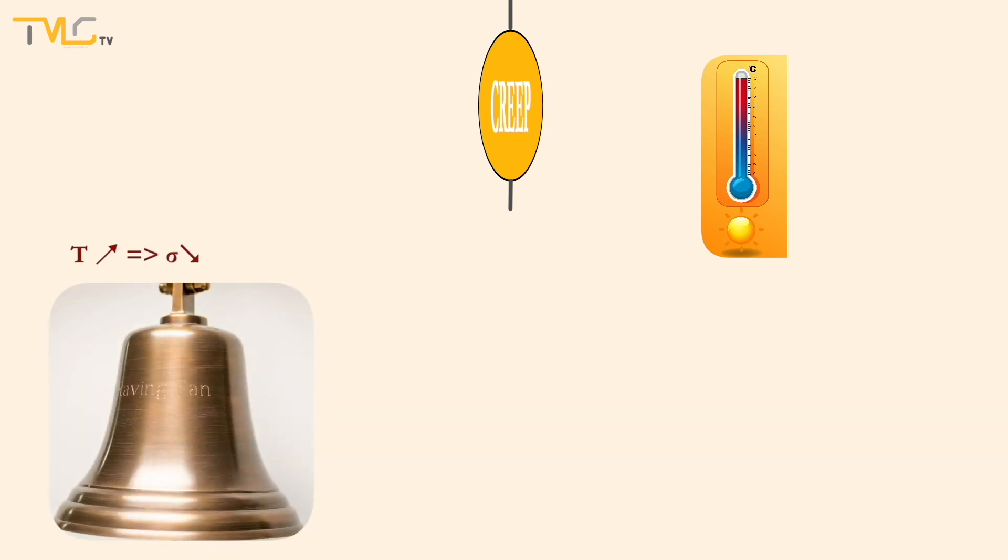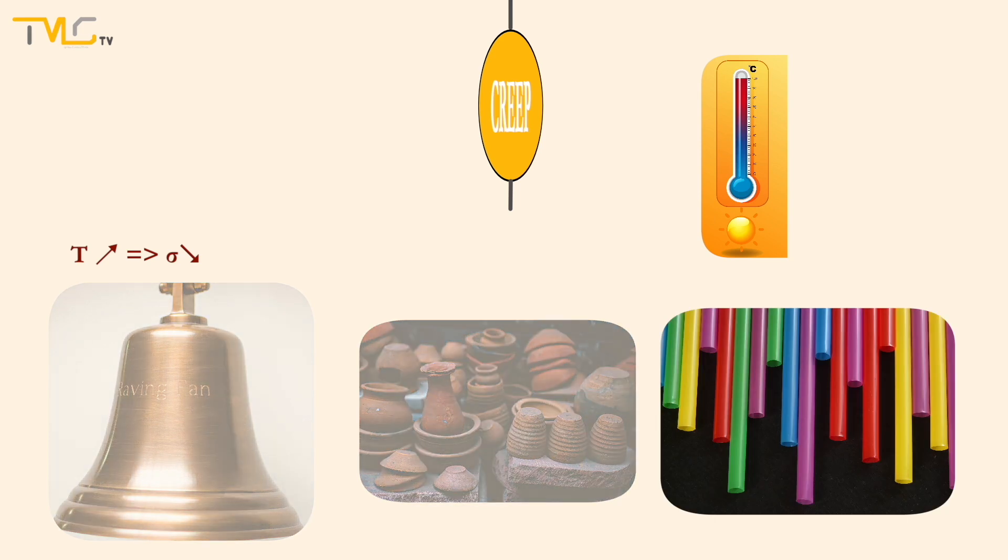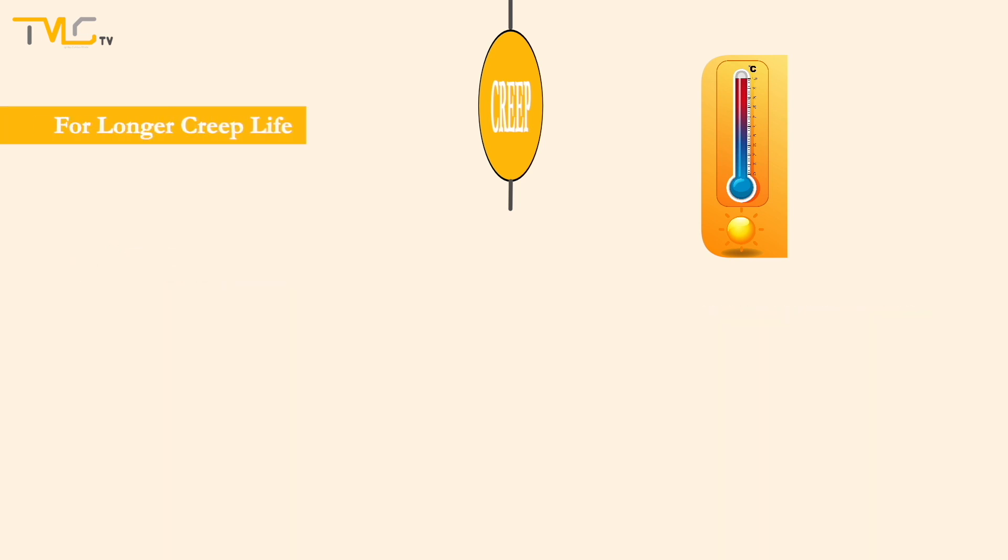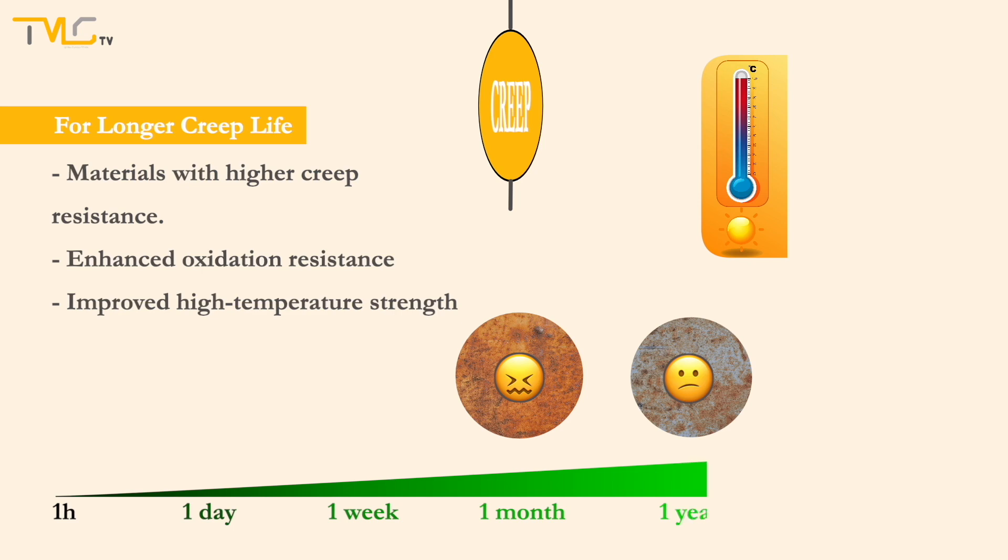Among metal, ceramic, and polymer material families, polymers are the most sensitive material group to the creep deformation. Yet, the effects of creep on the lifetime of a part can be decreased by choosing a material having higher resistance to creep, or creep resistance of materials can be modified by enhancing the oxidation resistance and high-temperature strength via surface modification or strengthening processes.